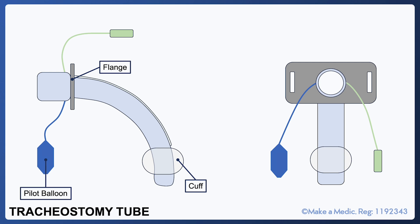Many tracheostomy tubes used in ITU will also have a subglottic suction port, though it is not present on all tracheostomy tubes. This is a port through which you can aspirate secretions that sit between the glottis and the cuff. We'll discuss this in more detail later.